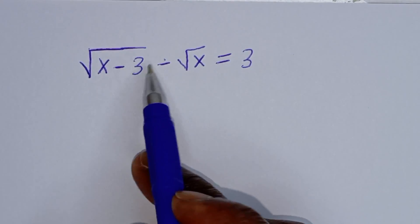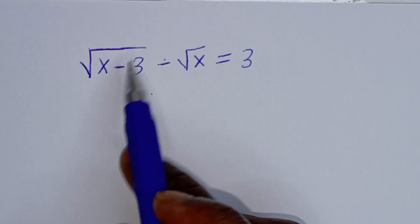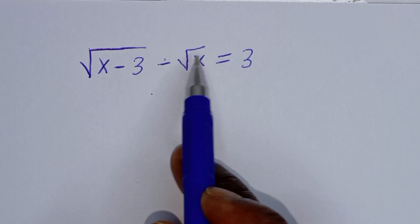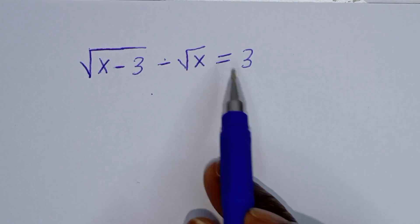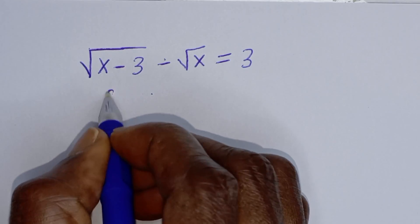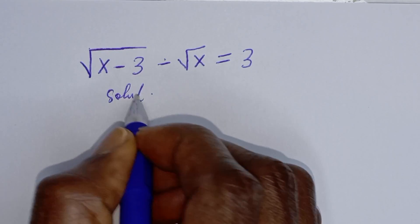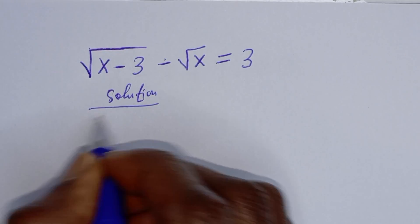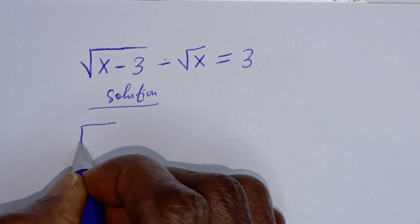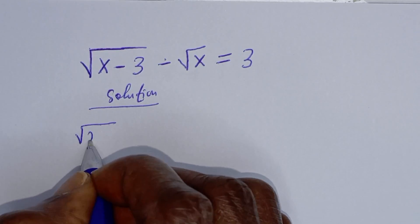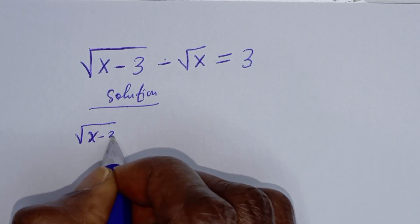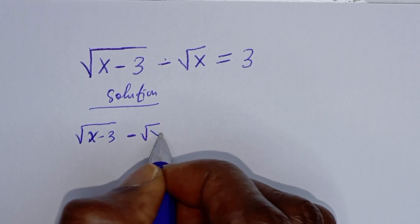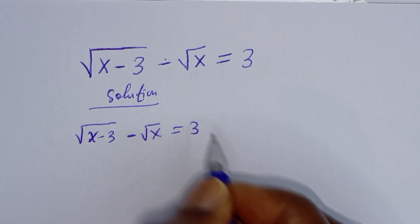Hello, how to solve for s from this given radical problem? Square root of s minus 3 minus square root of s is equal to 3. Solution.